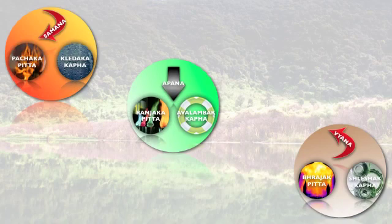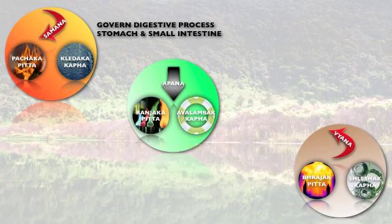Samanavayu, Pachak Pitta, and Kletak Kapha aid in the digestive process and are located mainly in the stomach and small intestine.